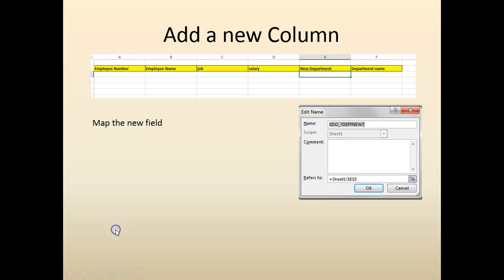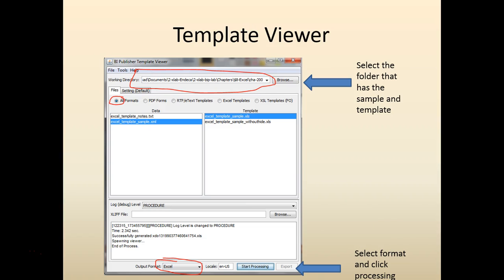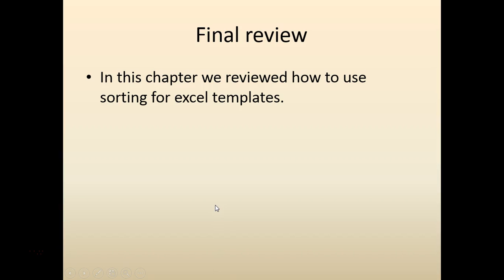We have seen how to create a new field, add a new column, replace empty values with a label like 'main department', and use the template viewer to review the data. We can also add header rows and colors to beautify the output. That concludes this chapter — we looked at how XDO metadata is used for sorting, tried out a few things, and explored the limitations of Excel templates. In the next few chapters we will look at more advanced features. Definitely try it out and experiment with different combinations — the idea is to get more hands-on so you learn better by trying. Thank you.